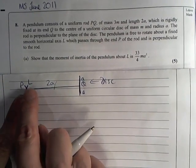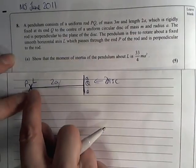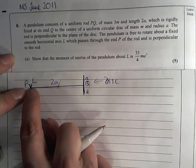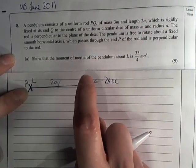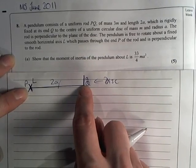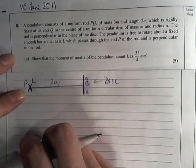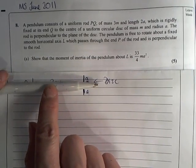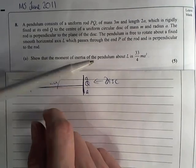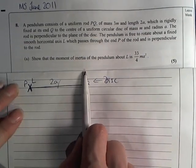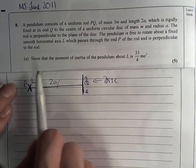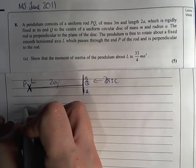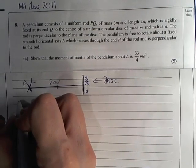Show that the moment of inertia of the pendulum about L is this value. The way that we do the moment of inertia about this axis L is we do the moment of inertia of the rod plus the moment of inertia of the disk. But the disk is a little bit fiddly because we have a formula for a disk about an axis which goes here.